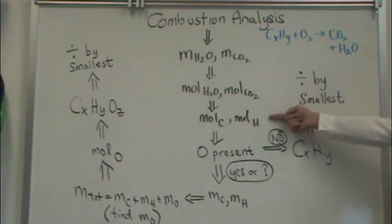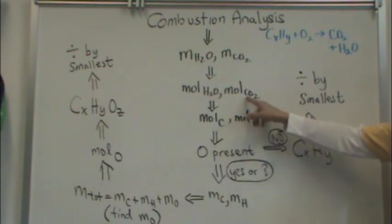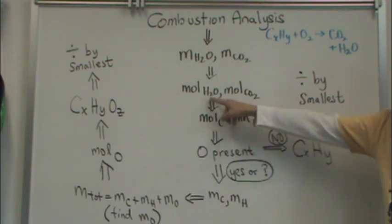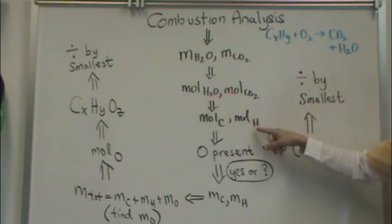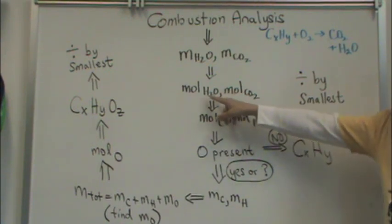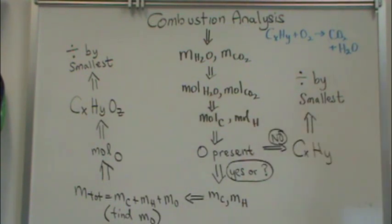Then you need to convert to the moles of carbon and the moles of hydrogen. How do you do that? Well, there's one mole of CO2 for every mole of carbon, and there's one mole of H2O for every two moles of H. Why is that? Because there's two hydrogens in water. You'll see me do that calculation.